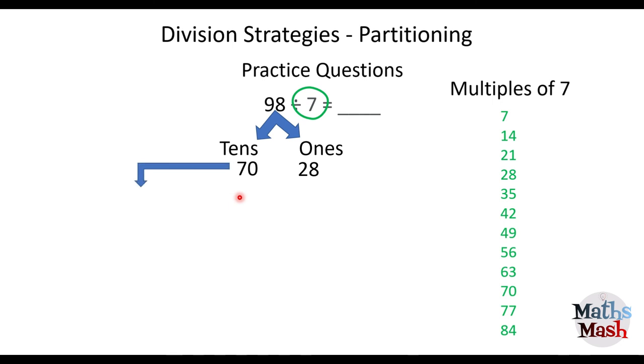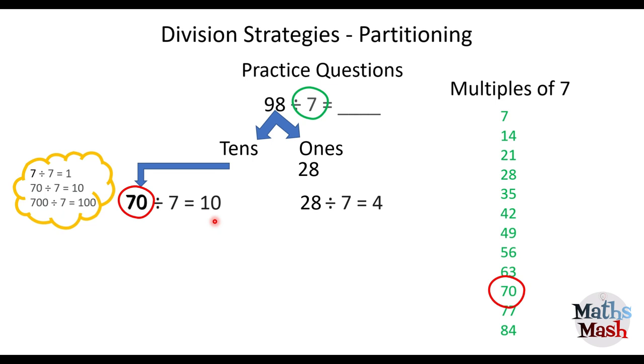And again, I'm going to come over here. And I'm going to think, well, 7 divided by 7 is 1. So 70 divided by 7 is going to be 10. So there's my 70 divided by 7 equals 10. And 28 divided by 7 is 4. Okay, so there's my 28 divided by 7. That's going to give me 4.